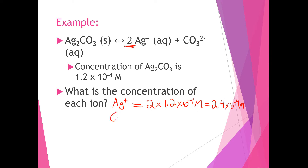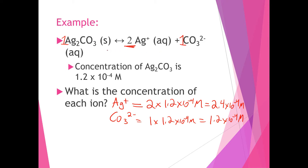The concentration of the carbonate ion follows the same approach. The carbonate ion has a one-to-one ratio with the silver carbonate, so it will just be 1 times 1.2 times 10 to the negative 4 molar, for a total of 1.2 times 10 to the negative 4 molar. So that's how I can figure out the concentration of each ion given what concentration of silver carbonate gets dissolved.